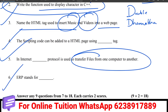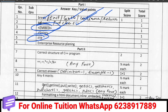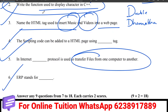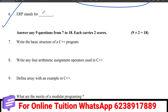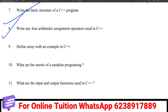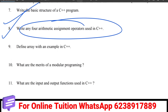ERP stands for Enterprise Resource Planning — that is the full form. Moving on to two-mark questions: C++ has a basic structure using 'namespace std'. The most important question covers C++ operators — arithmetic and assignment operators. There are 4 arithmetic assignment operators — this is very important.